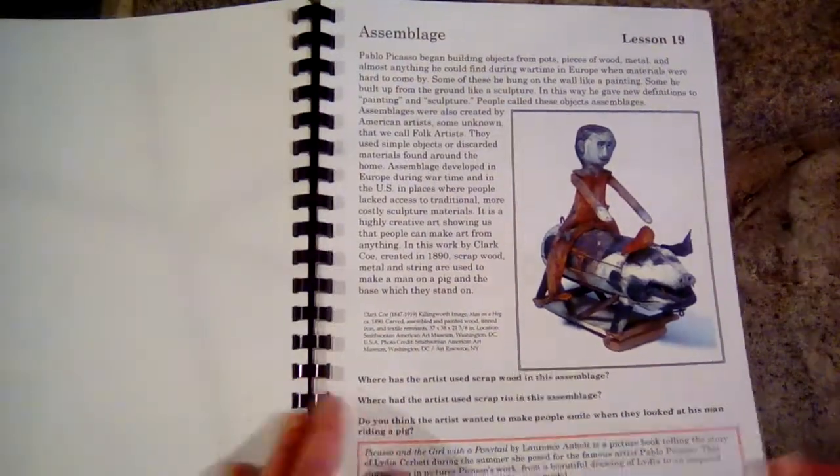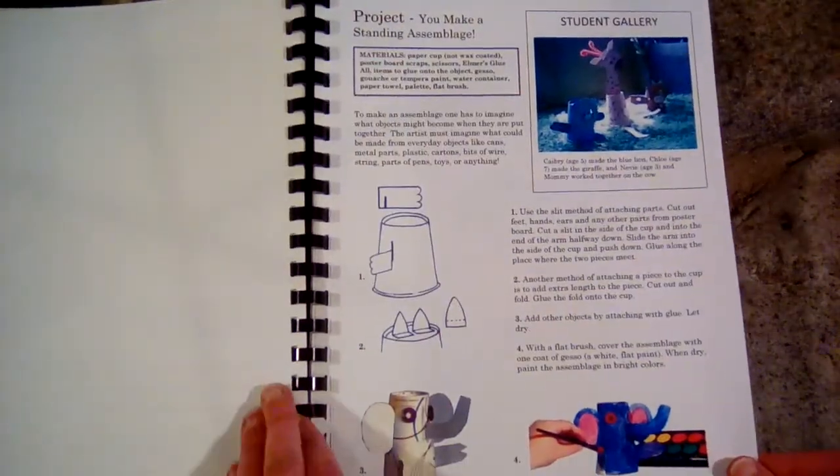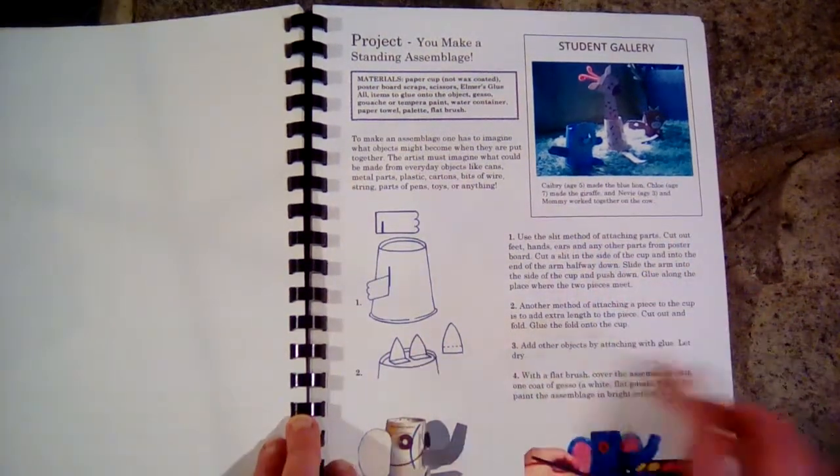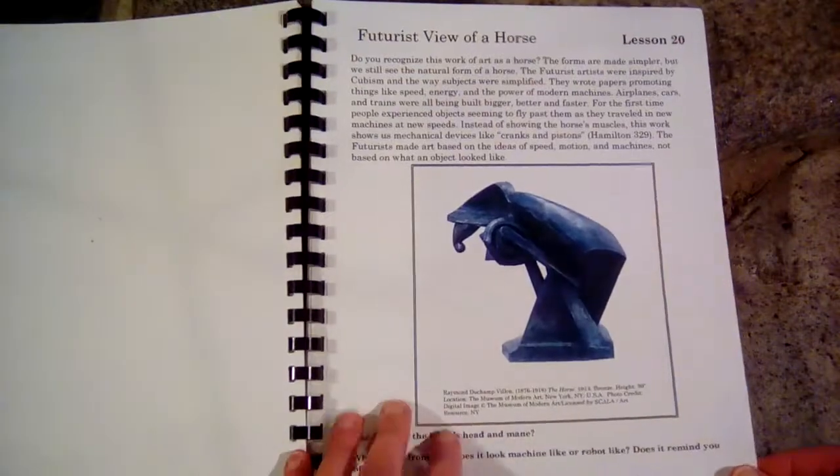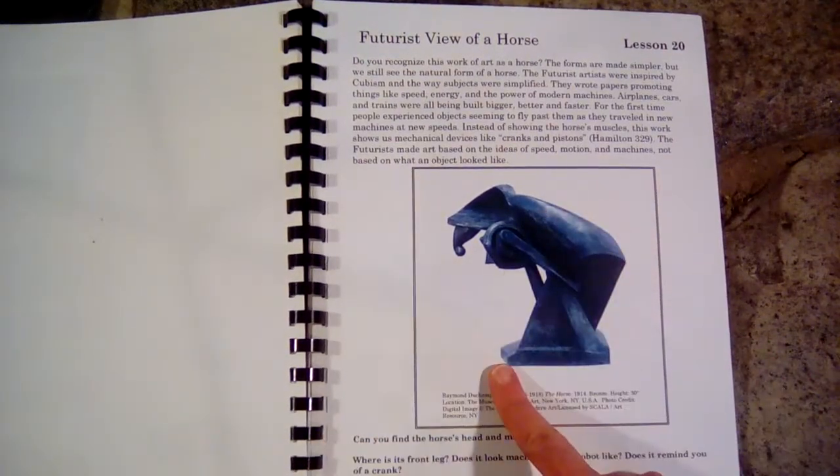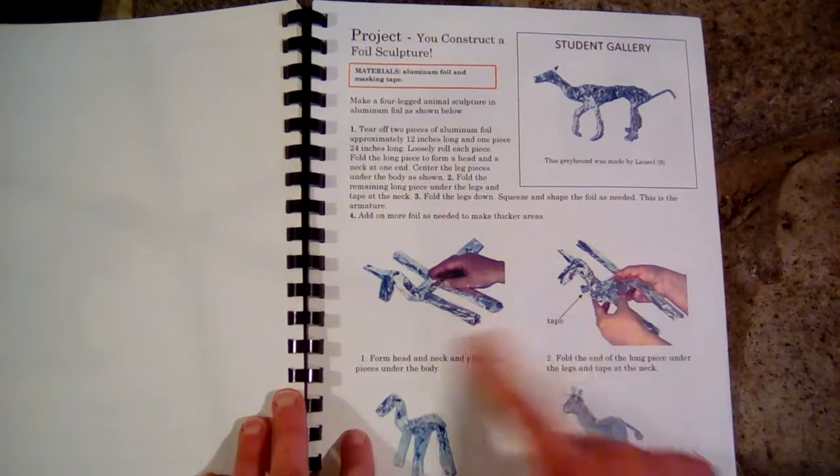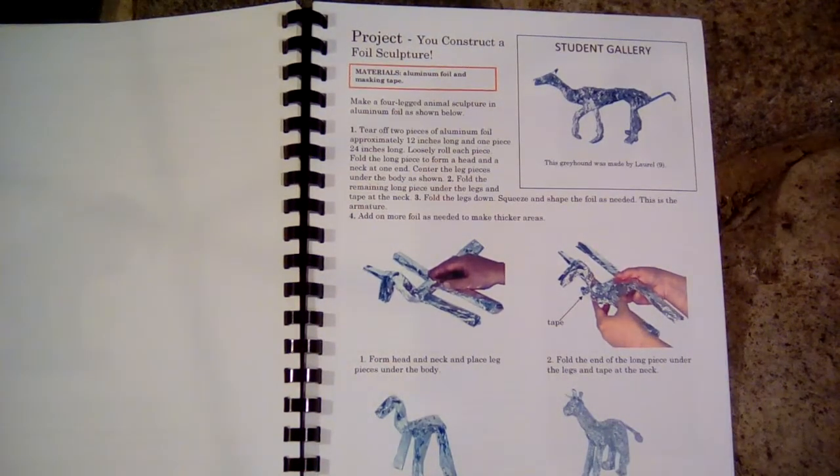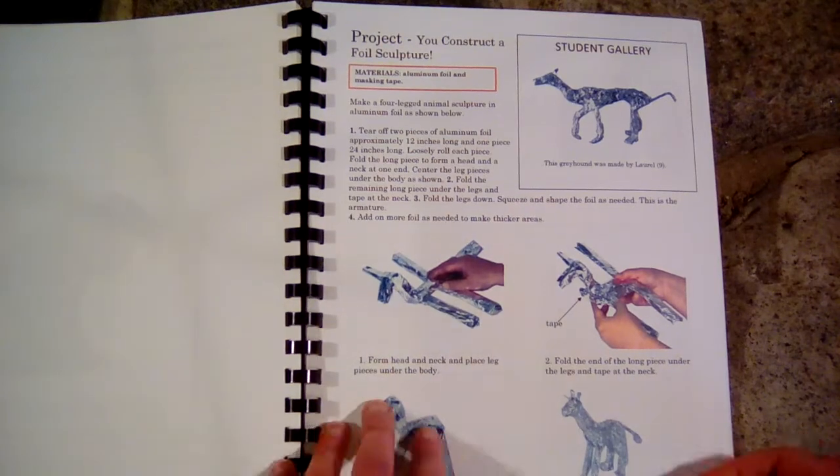So that's what this book looks like. As you can see, there's different kinds of projects. Like this is made out of little cups and things, a lot of sculptures. This is supposed to be a horse. So here's one where you use aluminum foil, there's another project where you use pipe cleaners to make an insect.